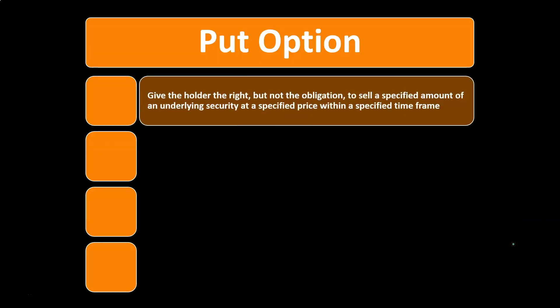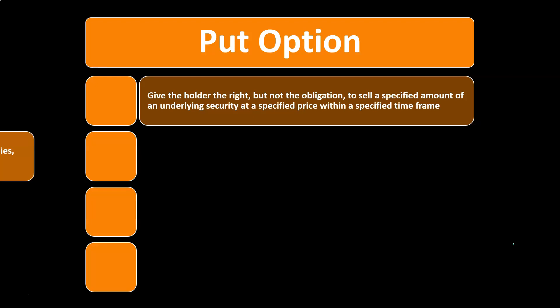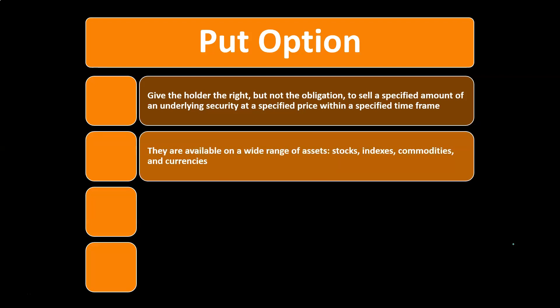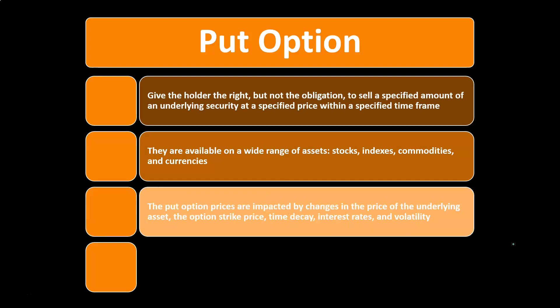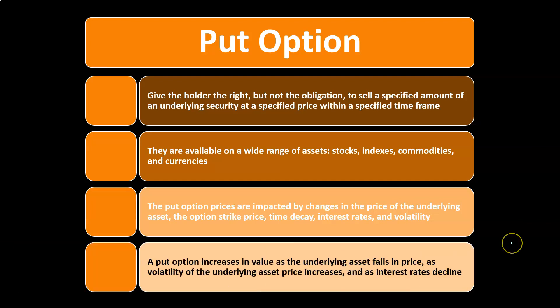A put option gives the holder the right, but not the obligation, to sell a specified amount of an underlying security at a specified price within a specified time frame. They are available on a wide range of assets: stock, indexes, commodities, and currencies. Put option prices are impacted by changes in the price of the underlying asset, the option's strike price, time decay, interest rates, and volatility.